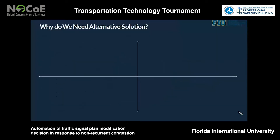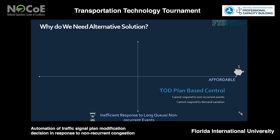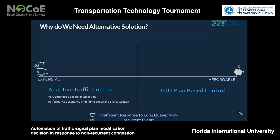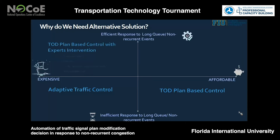All existing systems have shortcomings. The time-of-day plan-based control system cannot respond to traffic variation and cannot respond to non-recurrent events. The adaptive traffic control system may respond to traffic variation to some extent; however, it is very costly, and its performance under long queues and over-saturation still needs to be evaluated. The hybrid system introduced by some agencies is also costly, reactive, time-consuming, and not available 24/7.